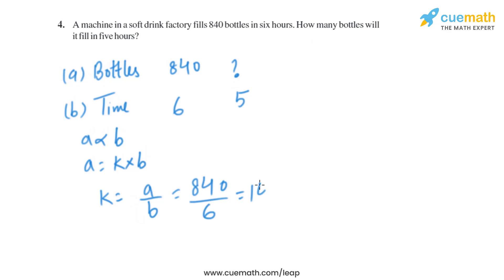The value of K is 140. Now we have the value of K and the value of B, we just have to find A. So A equals K times B, which is 140 multiplied by 5, giving us 700. Therefore, in 5 hours the machine will fill 700 bottles.